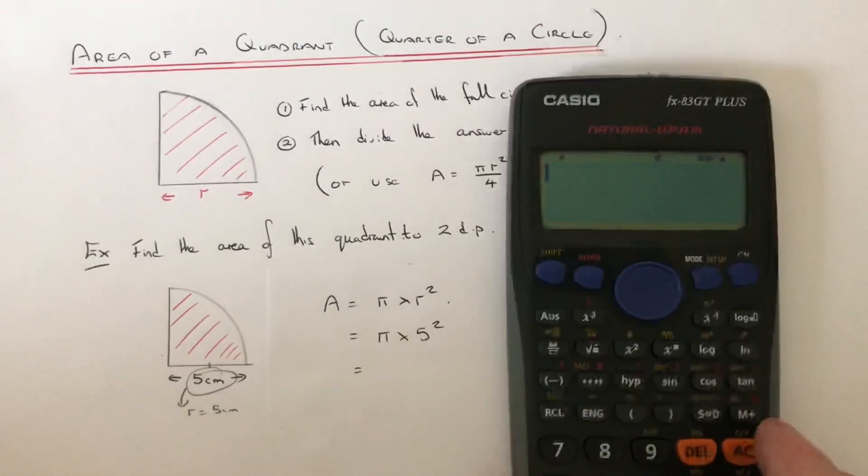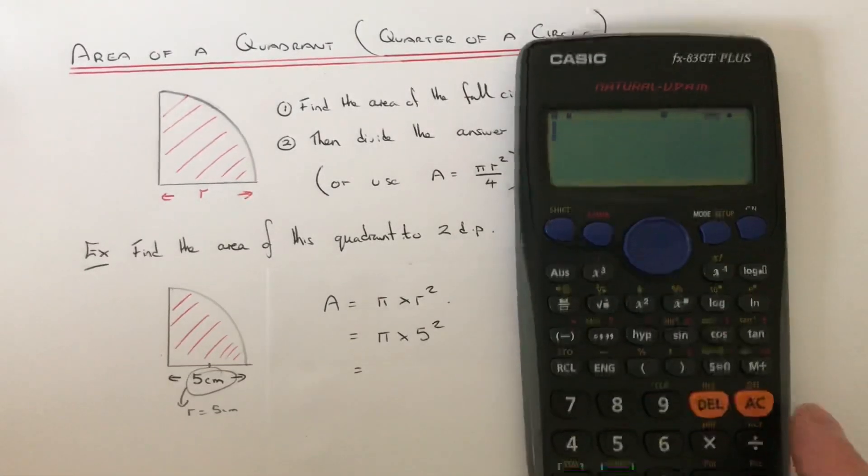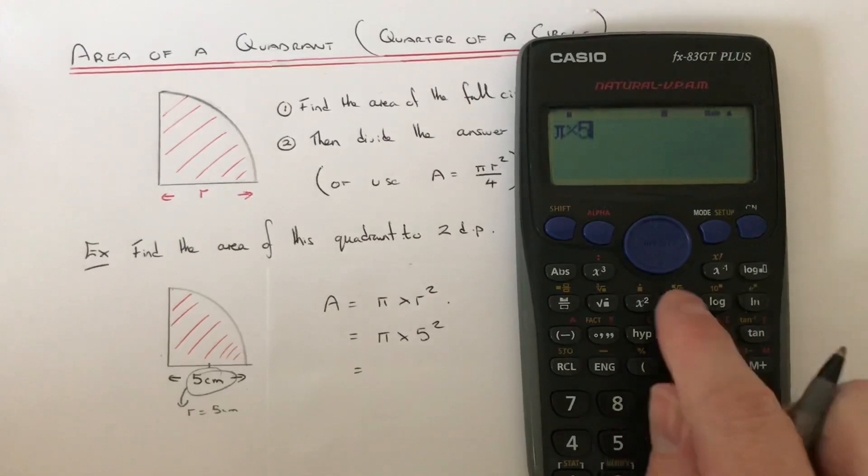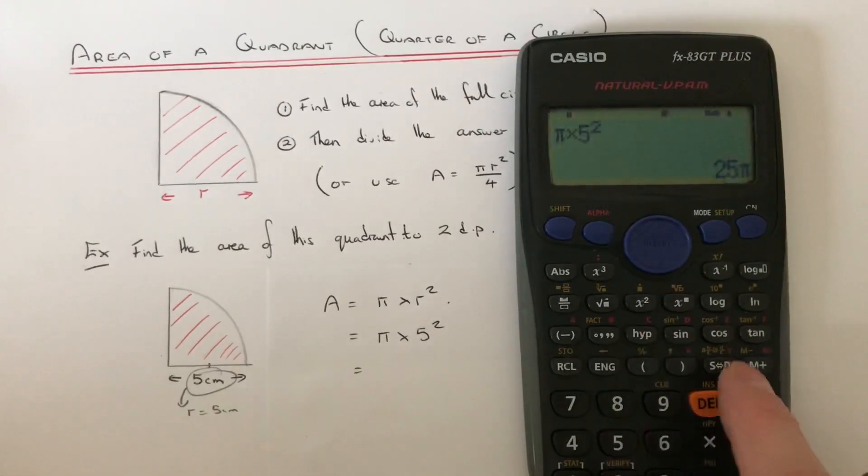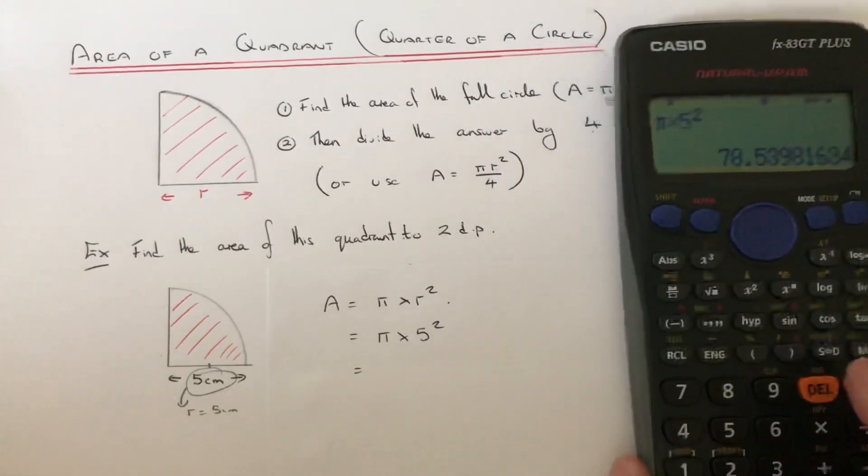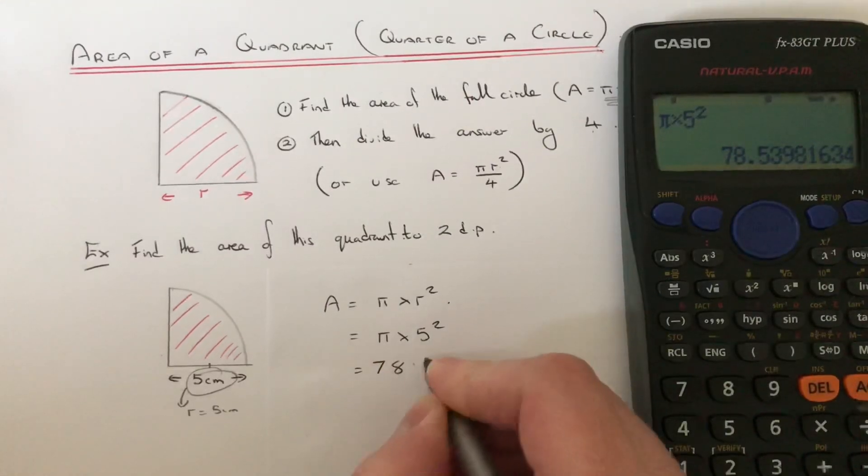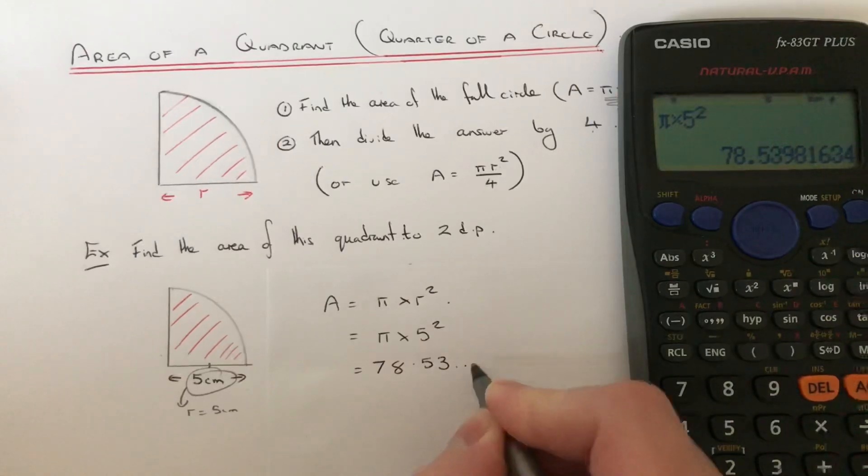So if we put this on our calculator we get shift pi times 5 squared. So that will give us 78.53 dot dot dot dot.